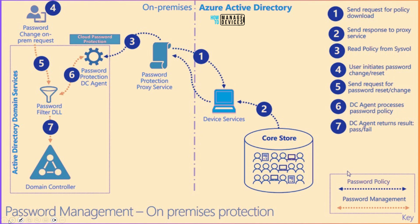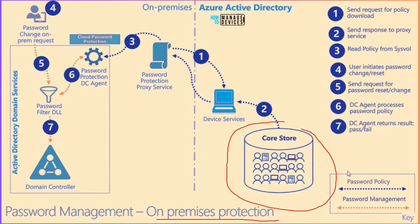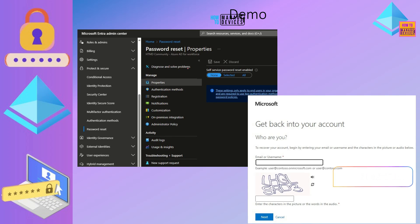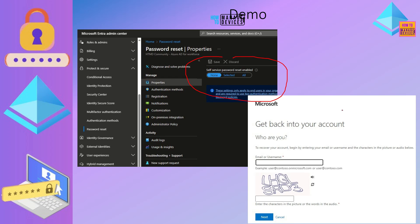This is another architecture view showing password management with on-premises protection. Some services are still in the cloud, and they are part of Azure Active Directory domain services, going through seven steps. You can pause the video and check this out — more details will be added to the video description. In the demo, we are going to see the Azure AD portal where we'll set up the password reset policy, and then we'll look at the end user experience: how to register and how to reset the password.